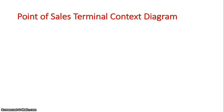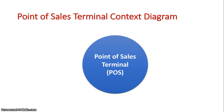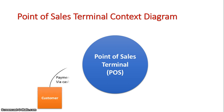Let's look at this as a context diagram. We have our point-of-sales terminal represented as one big circle to represent the whole information system. We now have our external entities. The first one is the customer, who pays via cash or card and receives a receipt of the transaction.